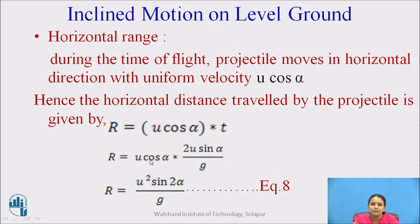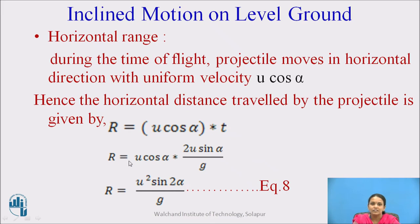The horizontal range is the horizontal distance traveled by the particle to reach the ground level. During the time of flight, the projectile moves horizontally with uniform velocity U cos alpha. The horizontal range R equals U cos alpha into 2U sine alpha divided by g, which simplifies to R equals U squared sine 2 alpha divided by g.